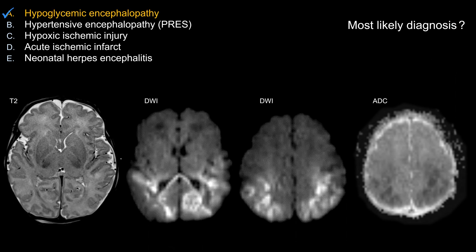The best choice here is A, hypoglycemic encephalopathy. Let's look at some of the features that make choice A the best choice in this case.